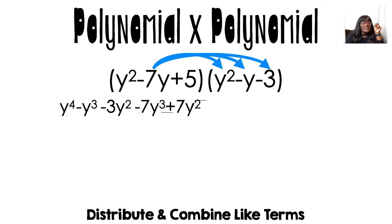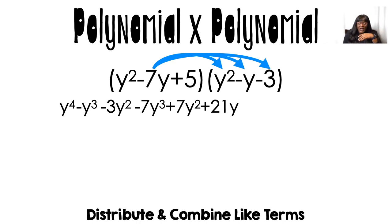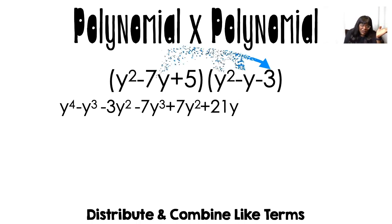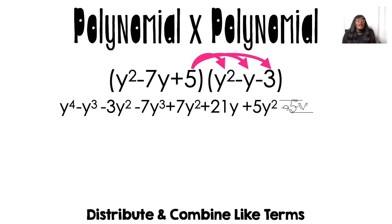Negative 7y times negative y gives me positive 7y squared. Negative 7y times negative 3 gives me positive 21y. Now moving on to the 5: 5 times y squared is 5y squared, then negative 5y, and then 5 times negative 3 is negative 15.